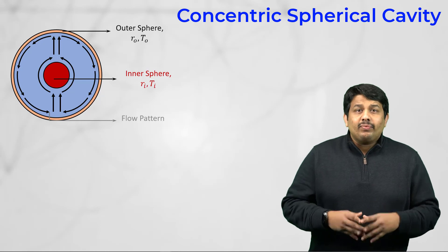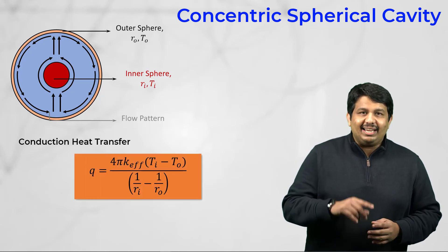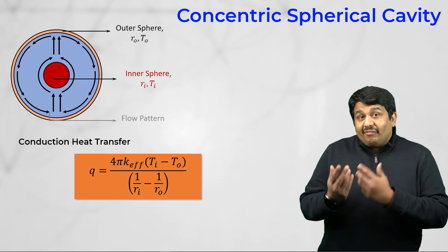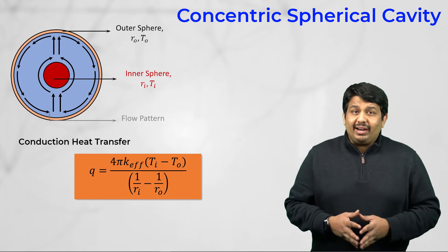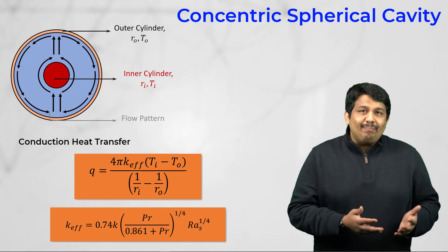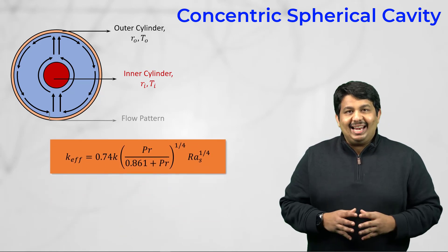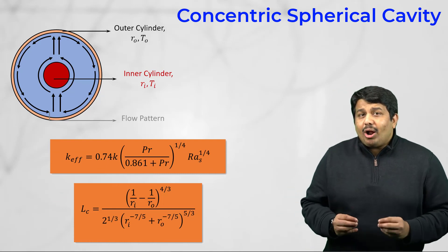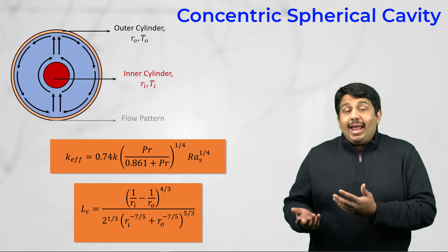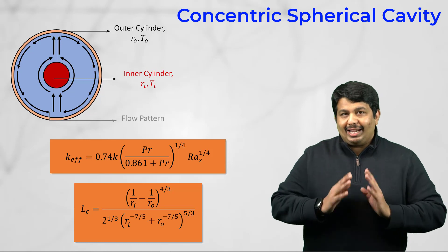We will use a similar conduction heat transfer based approach to analyze and estimate the natural convection heat transfer rate across the concentric spheres. From the conduction theory, the following relationship is used to account for the heat flux crossing the enclosed space between the inner and outer spheres. The value of the effective thermal conductivity and the length scale employed to estimate the Rayleigh number are provided by specific equations, and all properties must be estimated based on the average temperature between the inner and outer sphere wall temperatures.